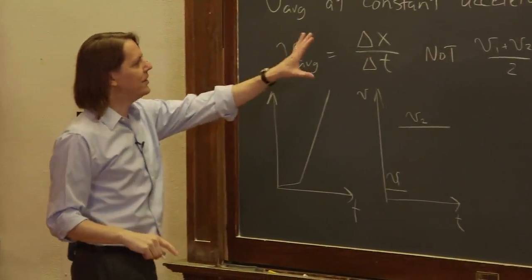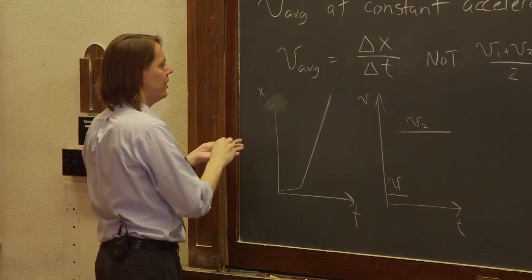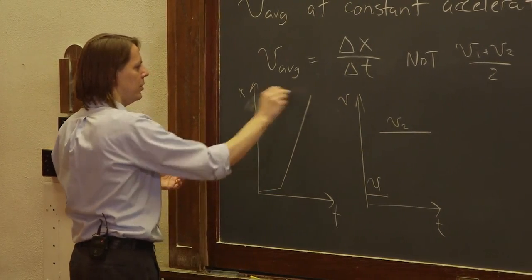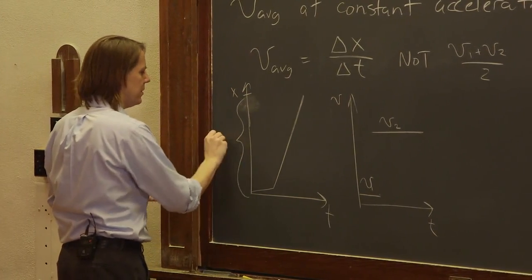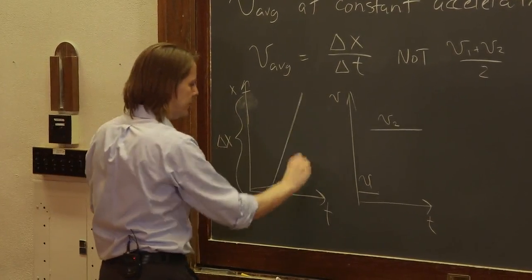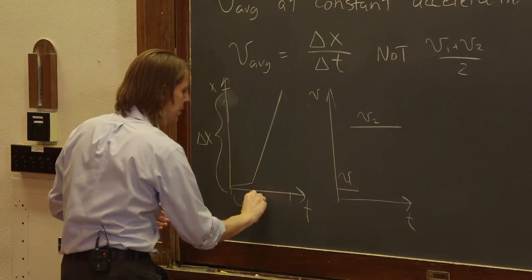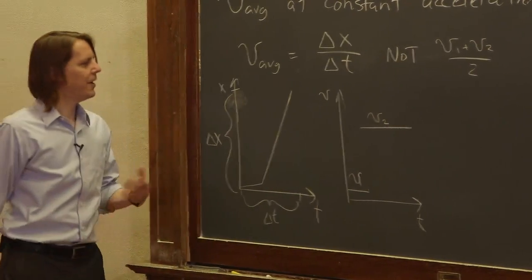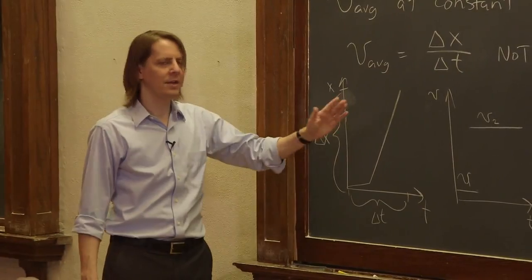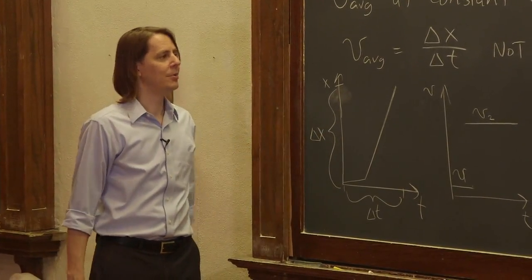We said to find it, in this case, you really need to find the total delta x, which would be kind of like this, and the total delta t, which would be basically that. So to find the average in this complicated case, you had to go all the way back to the position, time, information.